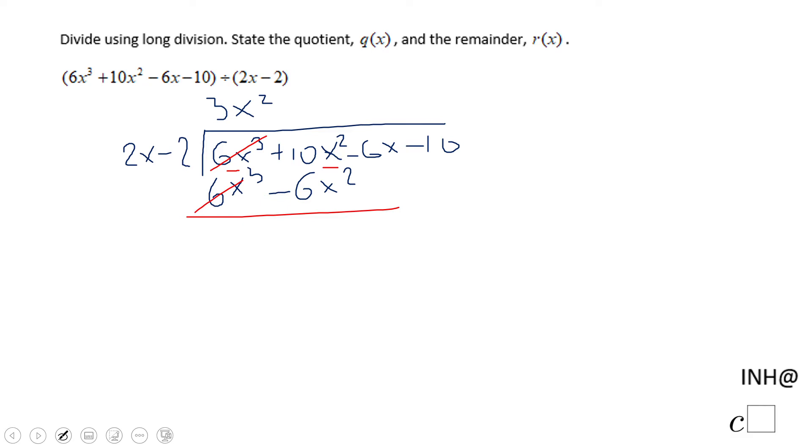These two cancel out. And what do you get? Positive 10 minus negative 6, that would be positive 16x² minus 6x.